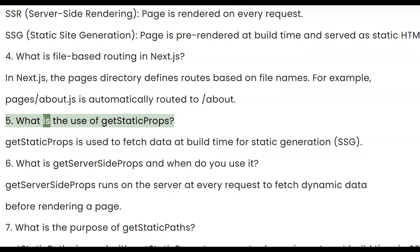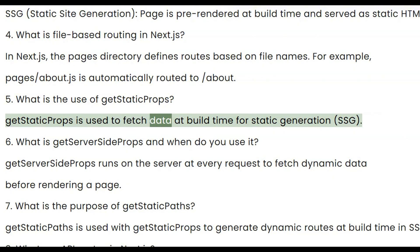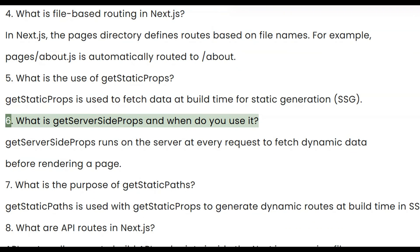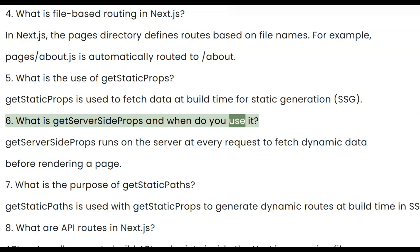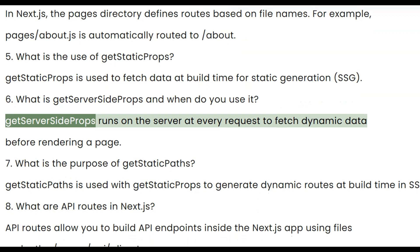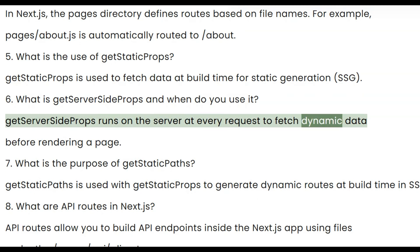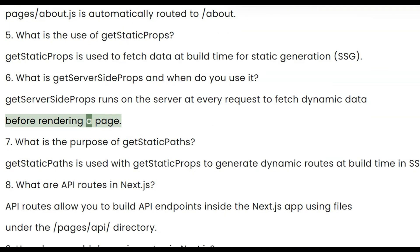Five, what is the use of getStaticProps? getStaticProps is used to fetch data at build time for static generation. Six, what is getServerSideProps and when do you use it? getServerSideProps runs on the server at every request to fetch dynamic data before rendering a page.